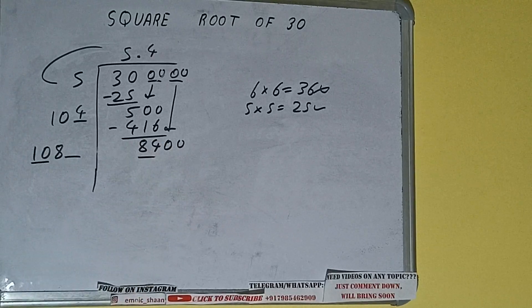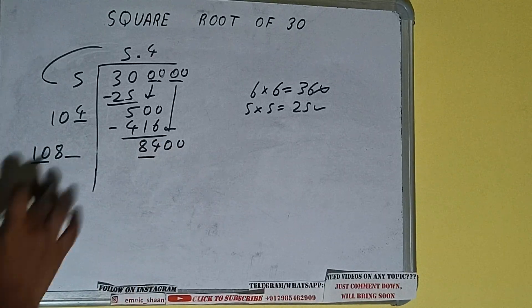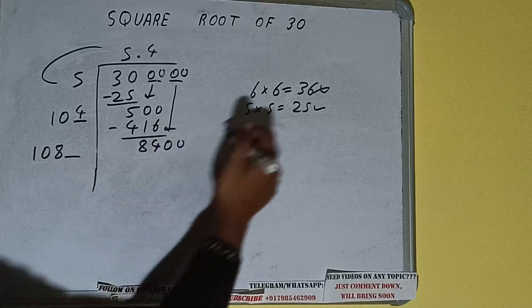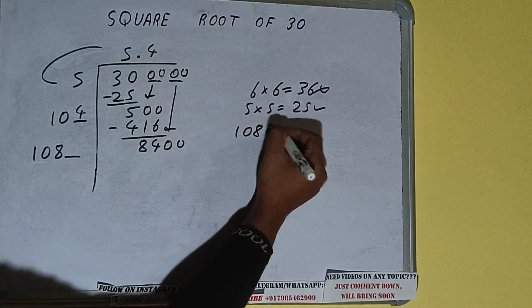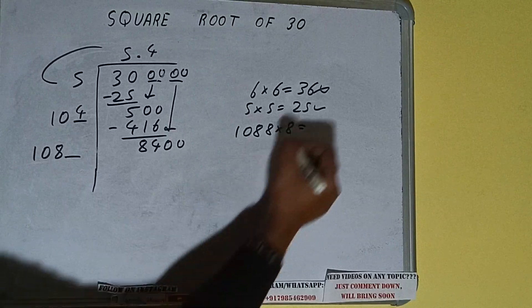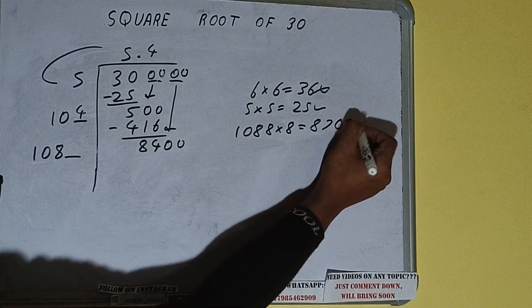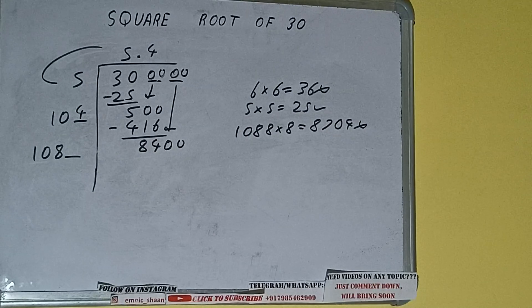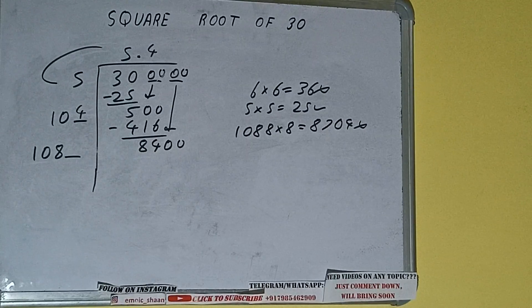with this 8400. So 108 times 8, we can try 8. 1088 into 8 we can try, it will be 8704, which is bigger than 8400, so we cannot take it. Let's try 7.